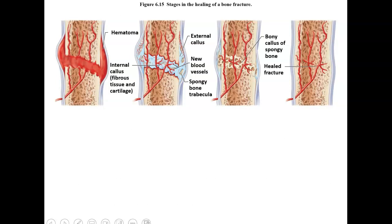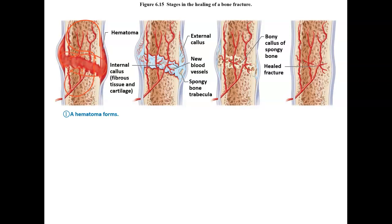When healing a break, the first thing that forms is a hematoma — basically a blood clot. The arteries in the area break and release blood, forming that clot. This can sometimes be life-threatening if major arteries are damaged. The hematoma forms with torn blood vessels; the area will be swollen, painful, and inflamed with heat.